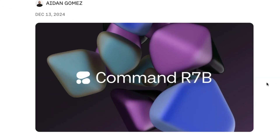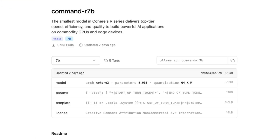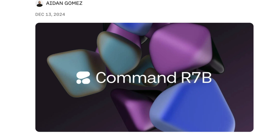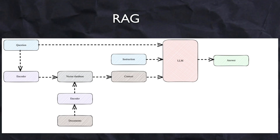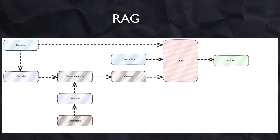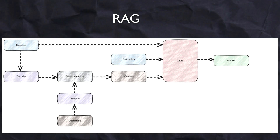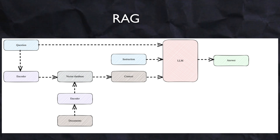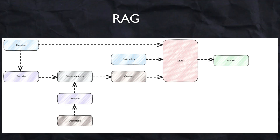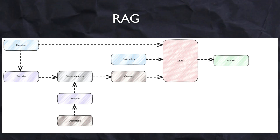The best small RAG model is currently available on Ollama. This is a model from a company called Cohere, whose specialization is RAG — Retrieval-Augmented Generation. For those who do not know what RAG is: it is a technique where you give additional context retrieved from some kind of data source to the LLM, so that the LLM understands the context better than what it knows from its training.